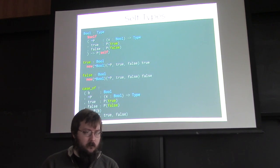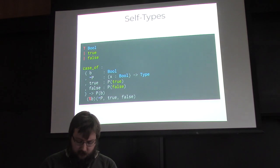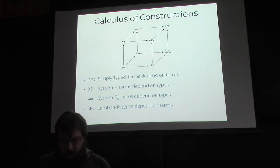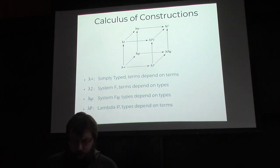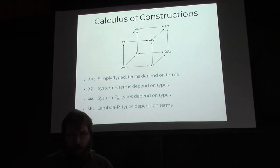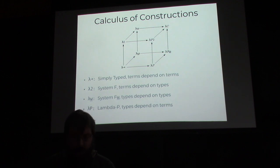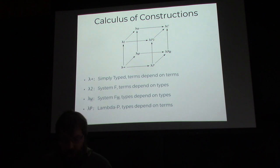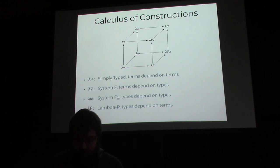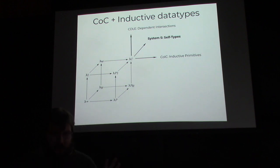Starting from simply typed lambda calculus — terms can depend on terms — on each axis we add another ability for things to depend on other things. In second-order lambda calculus, terms can depend on types. In System F-omega, types can depend on types. In lambda-P, types depend on terms. Finally we have the Calculus of Constructions, which is what every proof language is based on. We use the Calculus of Constructions.